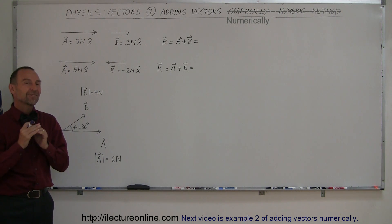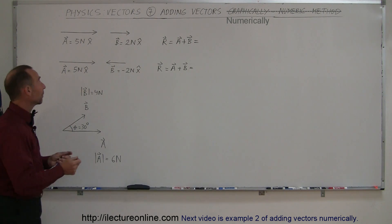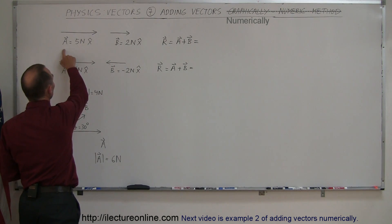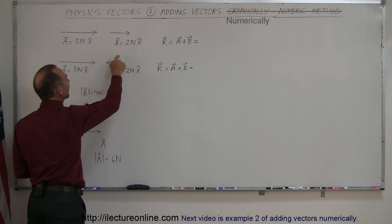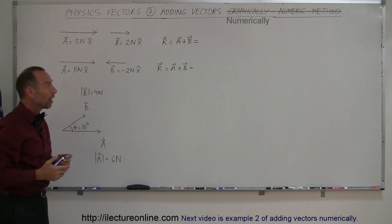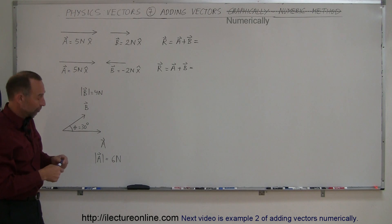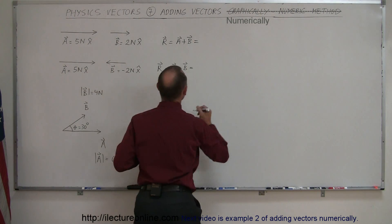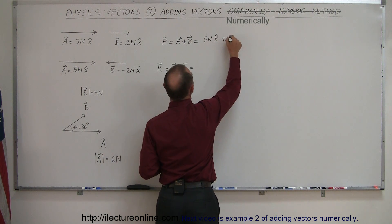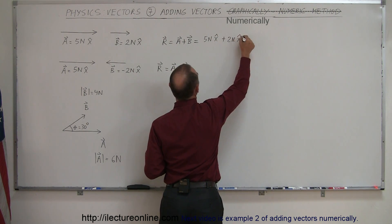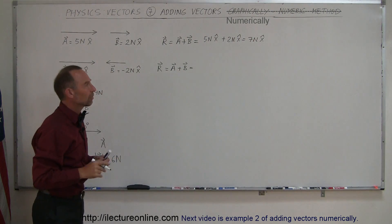If the vectors are in the same direction or in opposite directions, it's pretty easy. For example, here you have vector A with a magnitude of 5 Newtons in the x-direction and vector B with a magnitude of 2 Newtons in the same x-direction. When you add the two vectors together, that's A plus B — 5 Newtons plus 2 Newtons — which equals 7 Newtons in the x-direction. They are additive because they're pointing in the same direction.